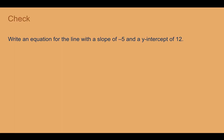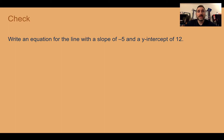Check your understanding: Write an equation for the line with a slope of negative 5 and a y-intercept of 12. Pause the video now and complete the check. The answer is y equals negative 5x plus 12. Slope negative 5 goes in for m, and y-intercept 12 goes in for b.